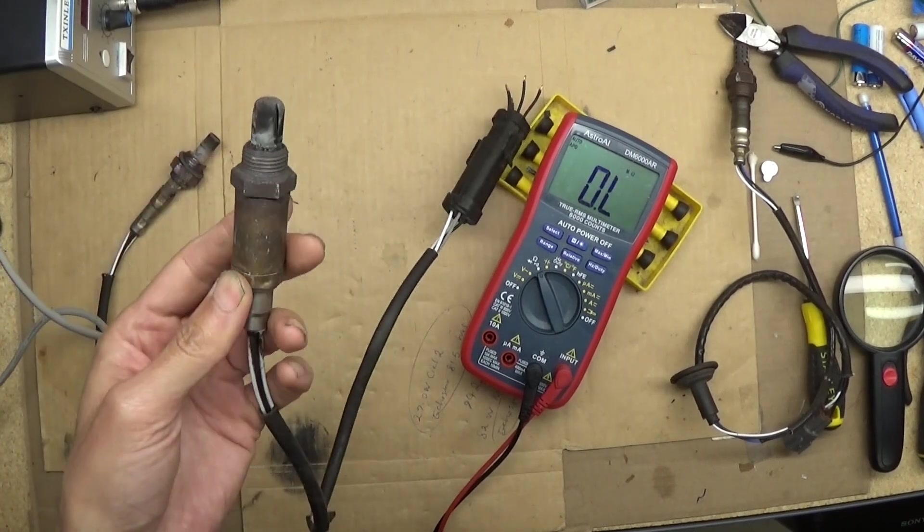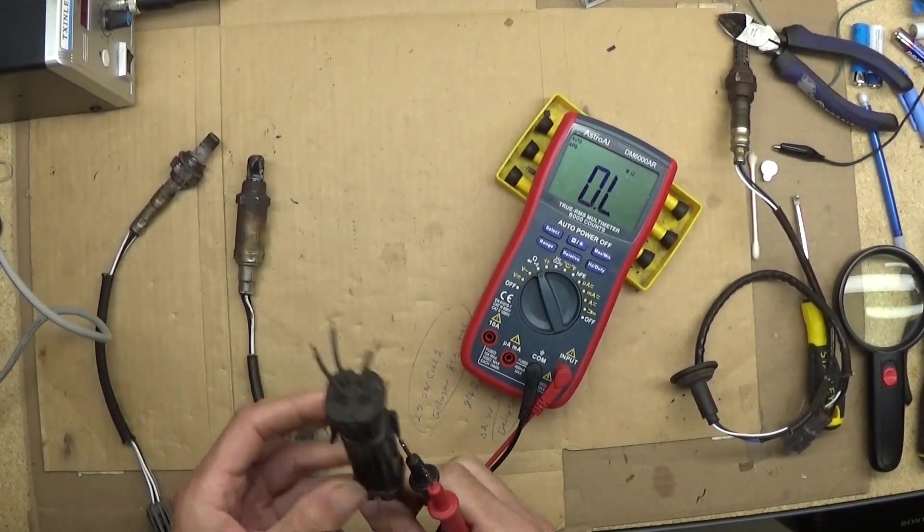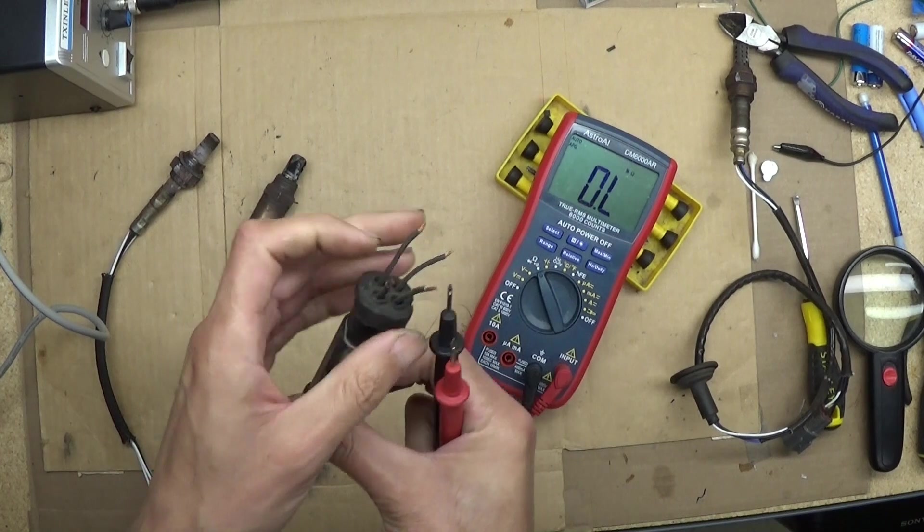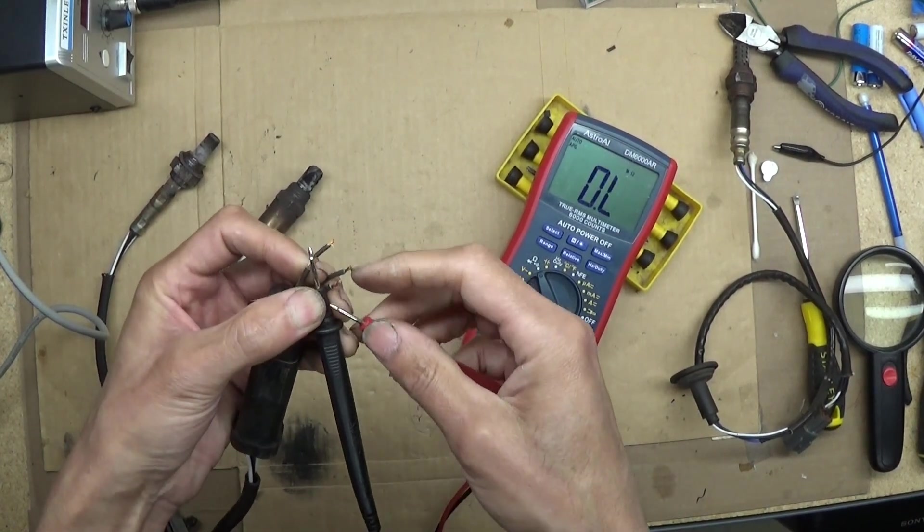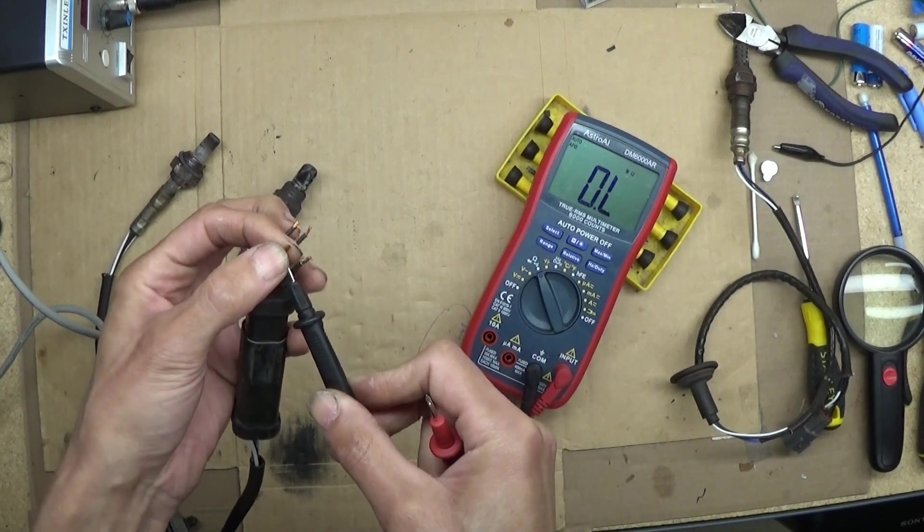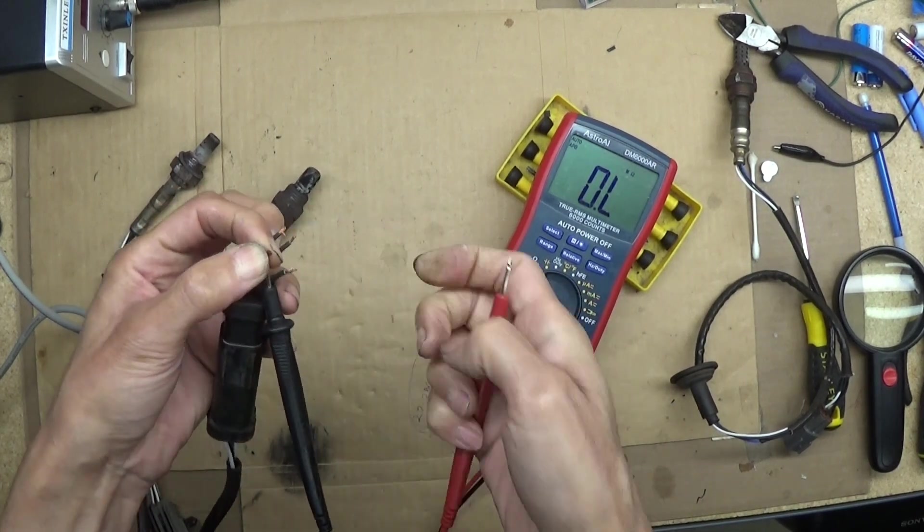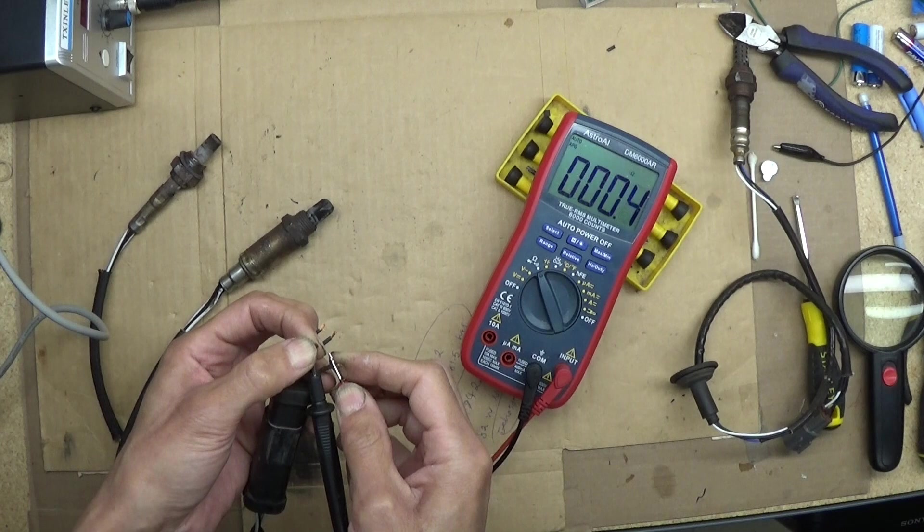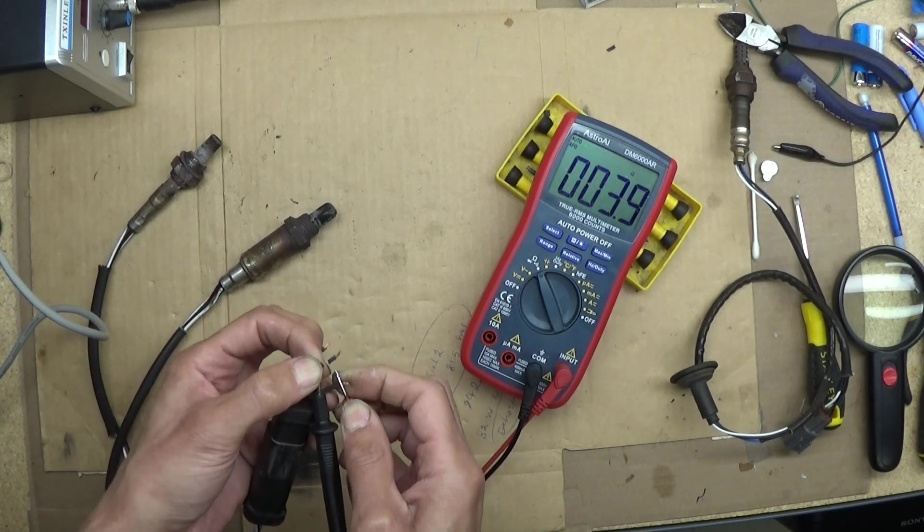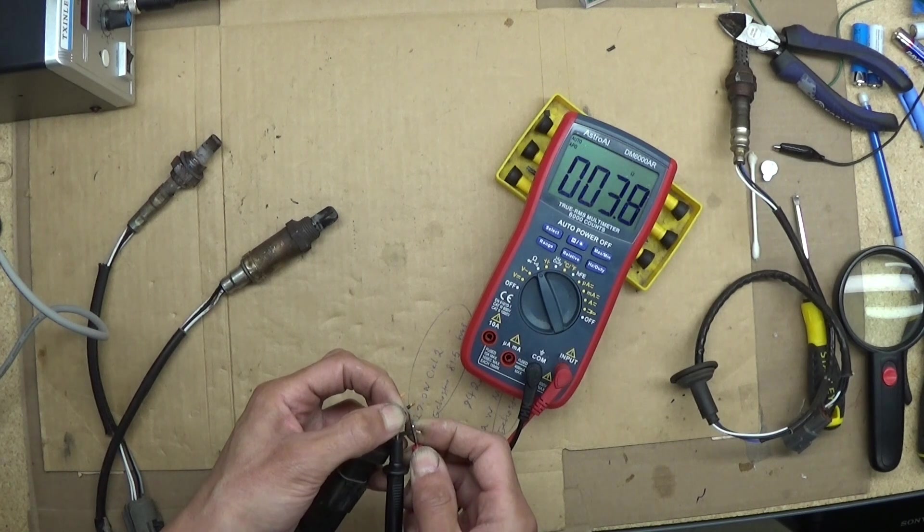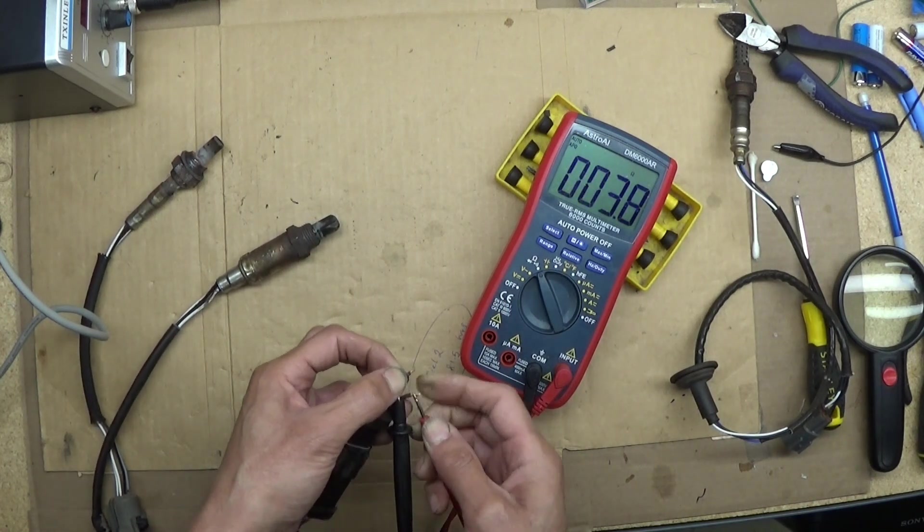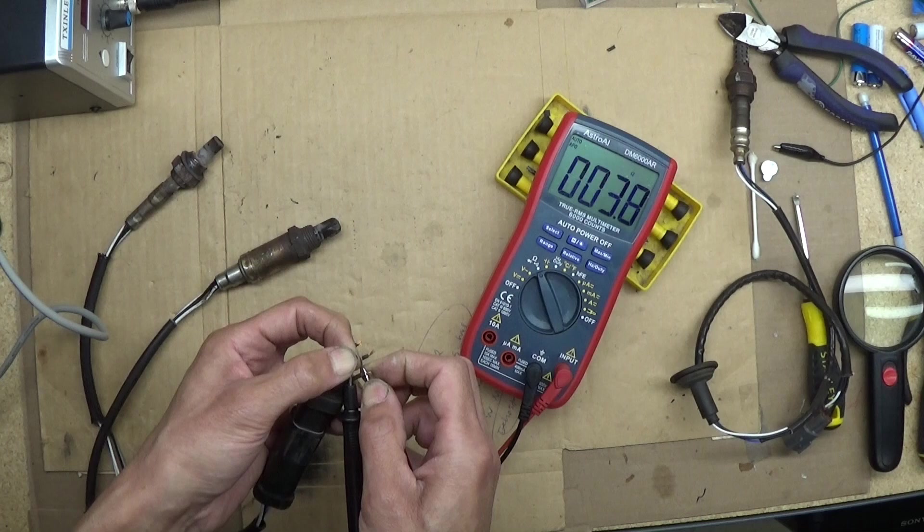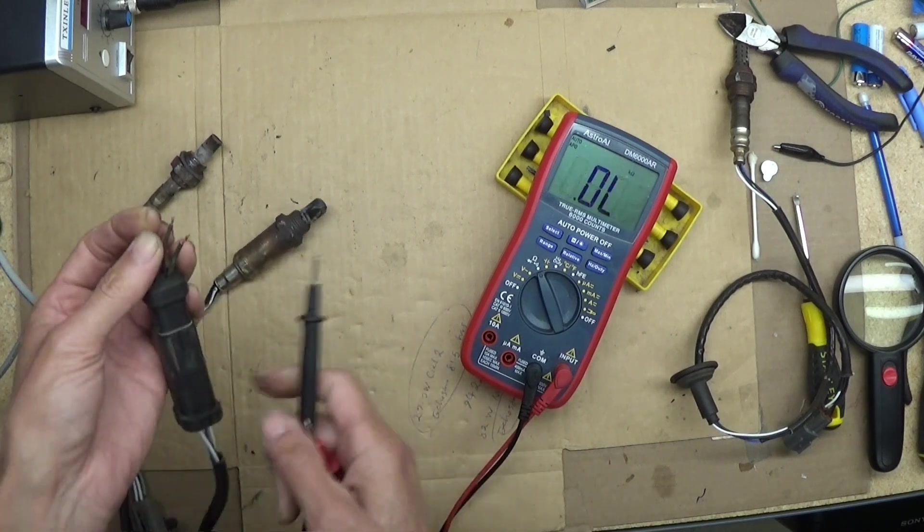Okay, first one I want to test is this one, the Bosch from the 95 Dodge Dakota. Two white wires—this is the heater wire. It should read between 3 and 12 ohms. Almost 4 ohms, 3.89. Then this is good.